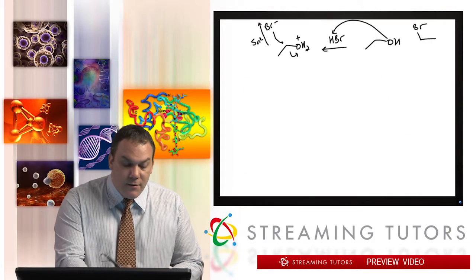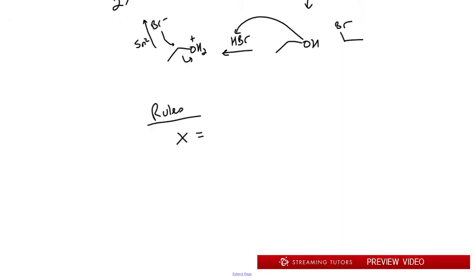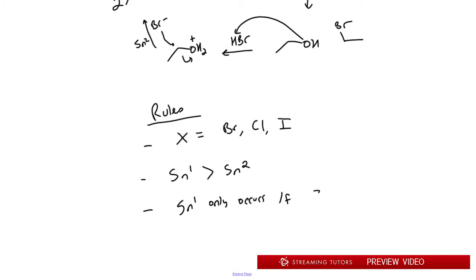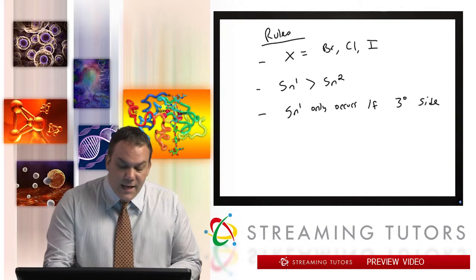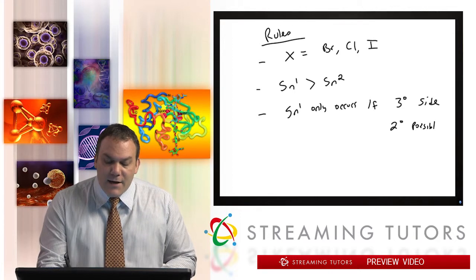Now for the rules to remember: number one, X can equal Br, Cl, or I — those are the three most popular; F is possible but not as common. Rule two: SN1 is better than SN2, so if you have a choice, SN1 is favored. It's better to make a carbocation than to displace it. SN1 only occurs if there is a tertiary carbon available.